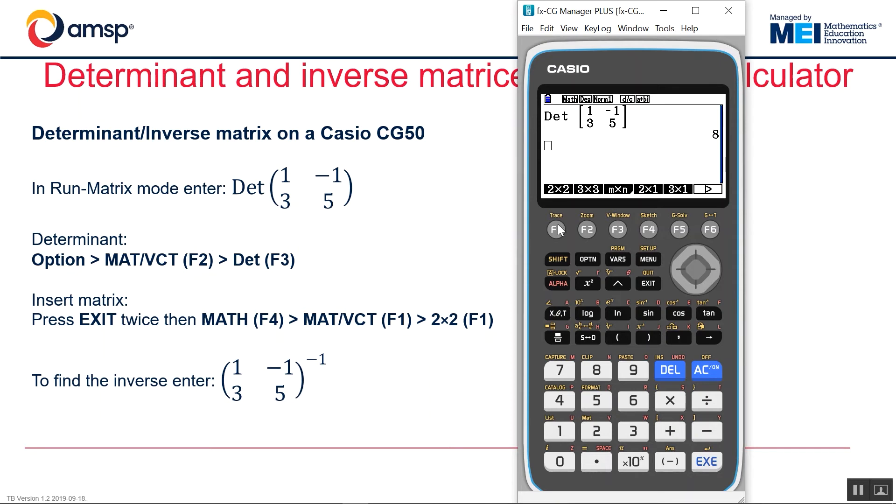Similarly, I can put in a 2 by 2 matrix: 1, negative 1, 3, 5. So that's the determinant and inverse on a scientific and graphical calculator.